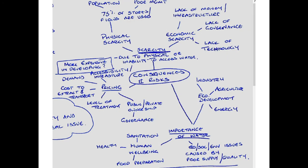What are the consequences and risks? Looking at water scarcity — due to physical or human factors — people don't have access to clean water. Physical scarcity is where 75% of the water stores or flows are used by the population. This could get worse as population increases, or through poor management, poor agricultural and irrigation techniques, industries having too much power, and lack of governance to control excessive use.